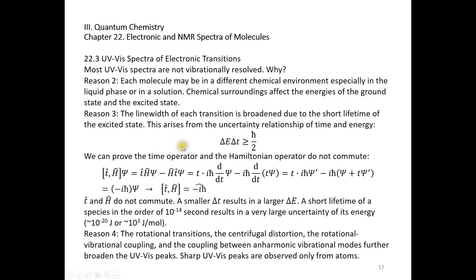Well, this is just because the time operator and the Hamiltonian operator do not commute. So we can evaluate the commutator of the time operator and the Hamiltonian operator. The Hamiltonian operator is equivalent to this iℏ ∂/∂t operator. So we do this, it turns out this commutator of time and Hamiltonian is equivalent to negative iℏ. This is non-zero. That means time and Hamiltonian do not commute.